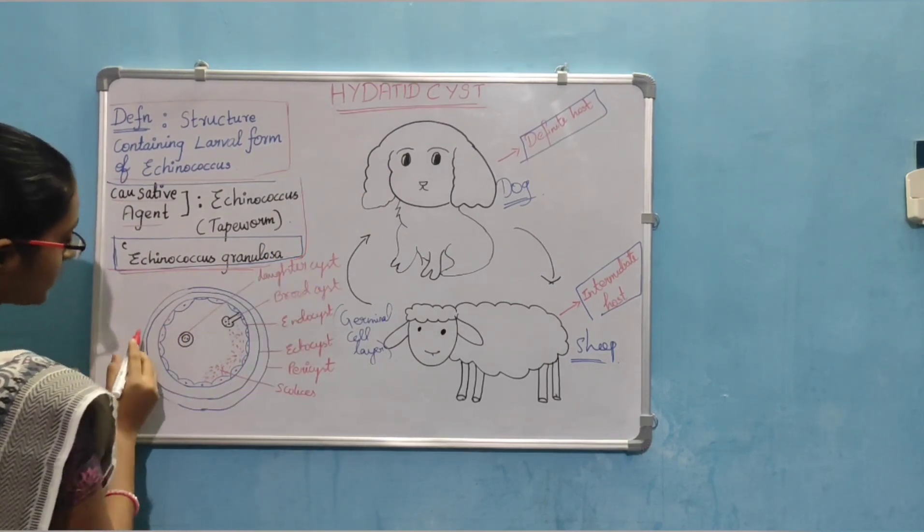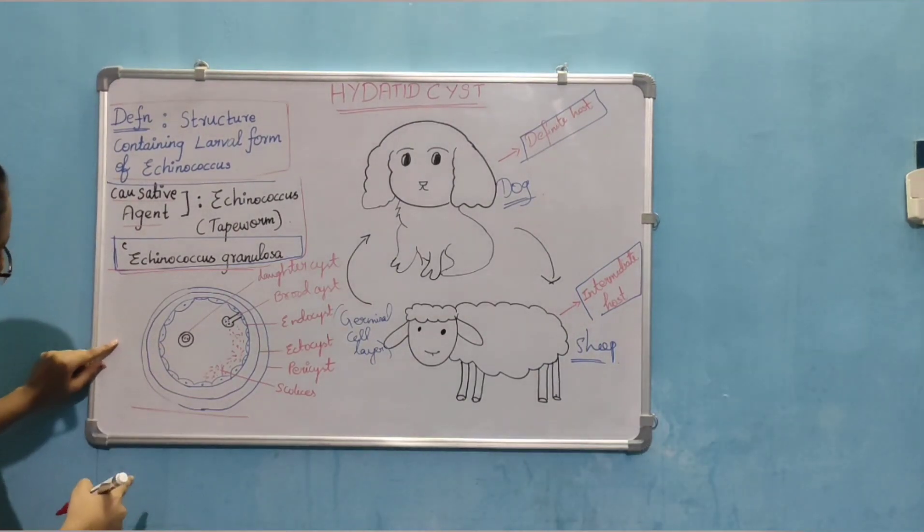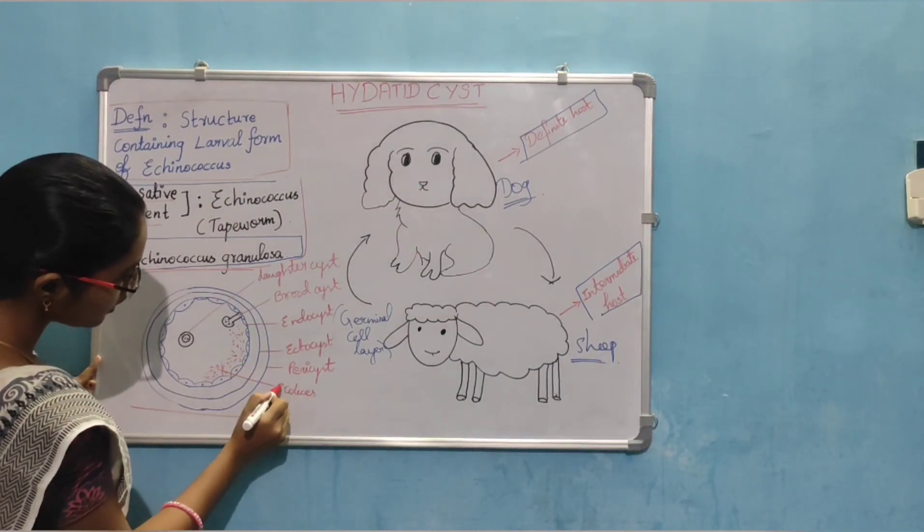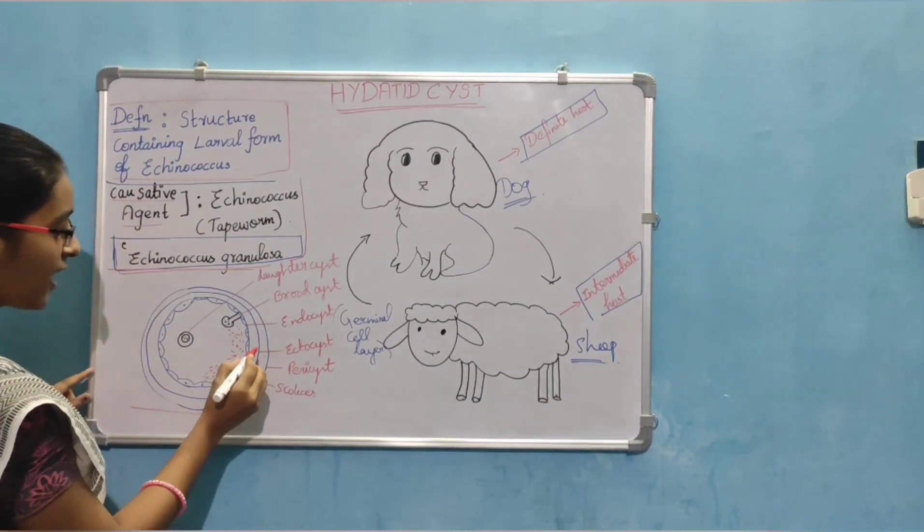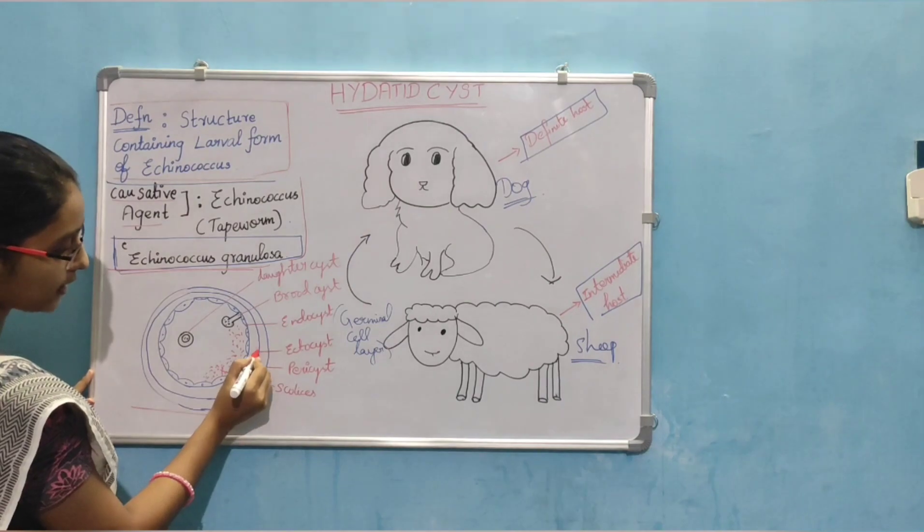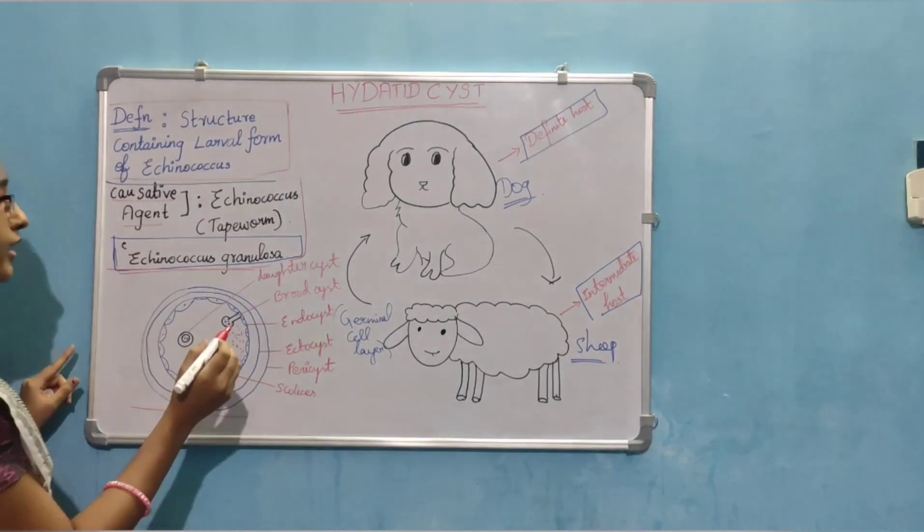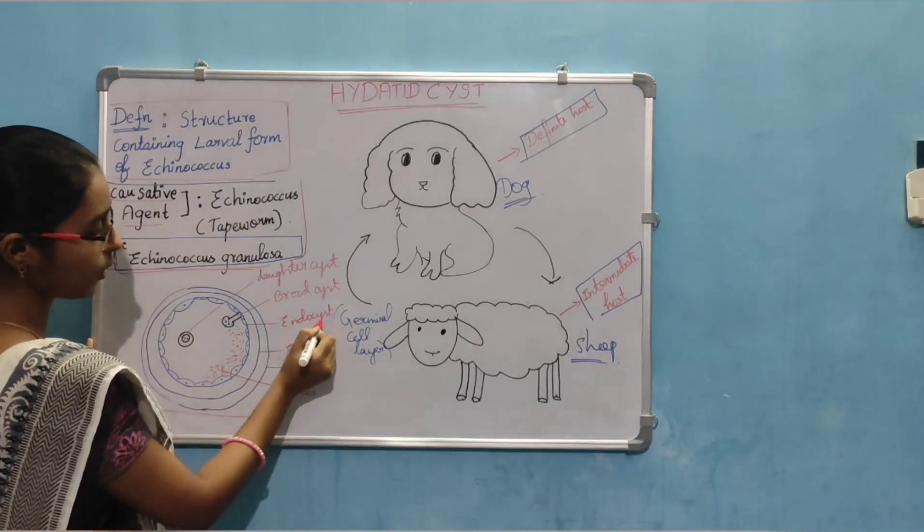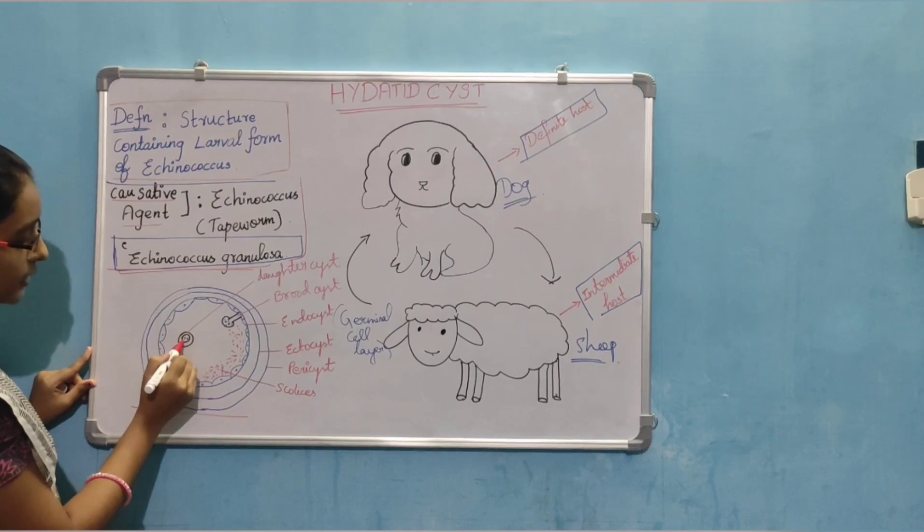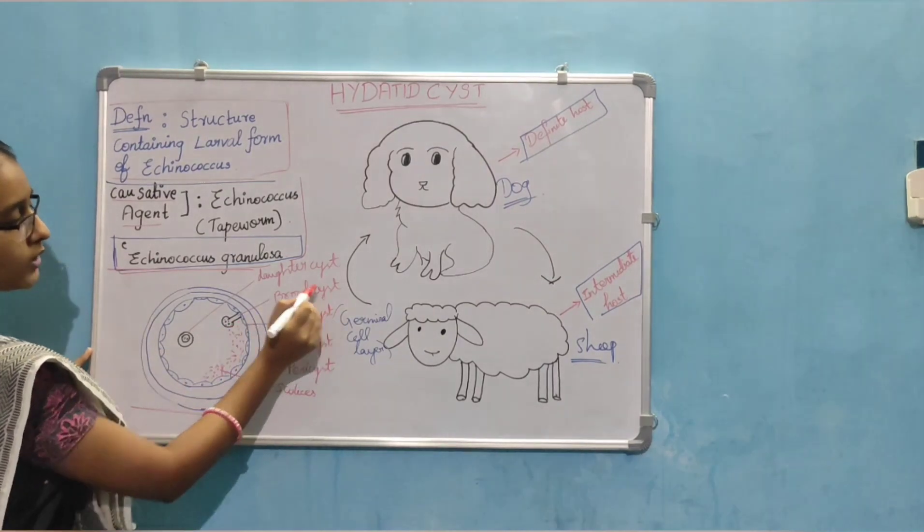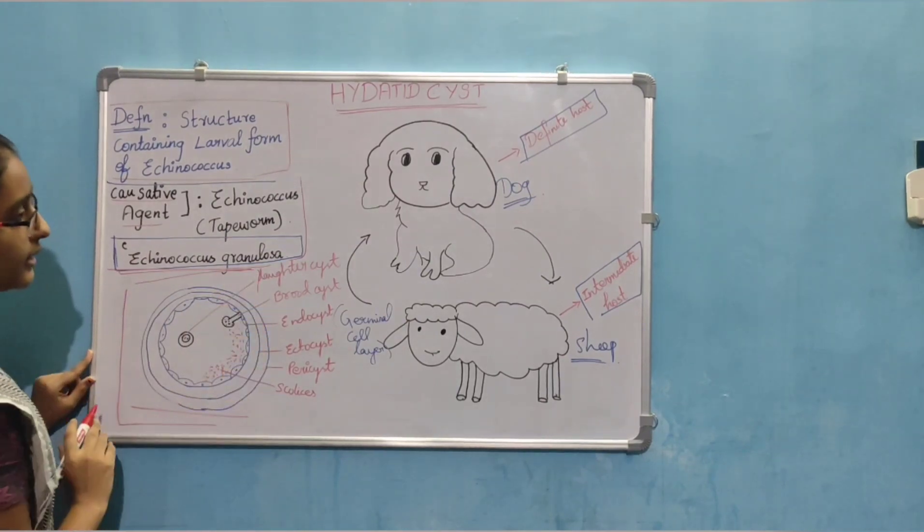Here is the structure of hydatid cyst. The outer layer is the peri-cyst, the mid layer is called ecto-cyst, and the inner layer is called endo-cyst. It also has daughter-cyst as well as brood-cyst. So this is about the structure of hydatid cyst.